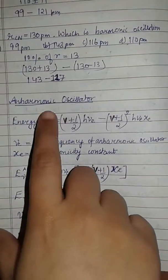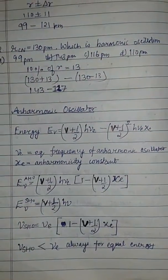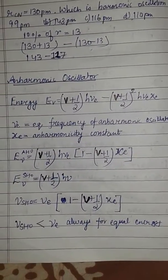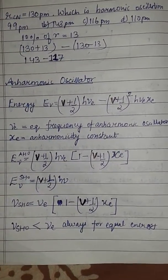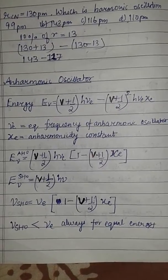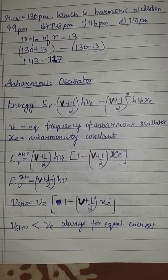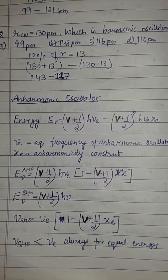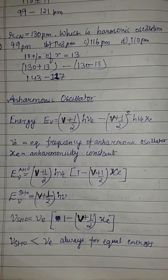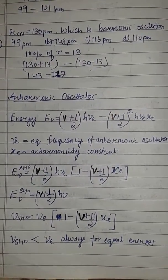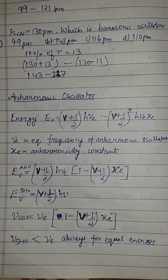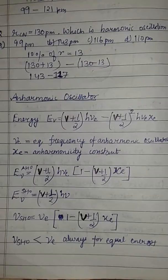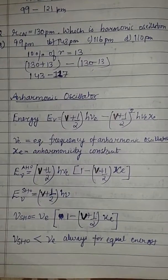We will study an anharmonic oscillator in which energy is given by E_V equals (V + 1/2)hν_e minus (V + 1/2)² hν_e X_e, where ν_e is the equilibrium frequency of the harmonic oscillator and X_e is the anharmonicity constant for anharmonic oscillation.